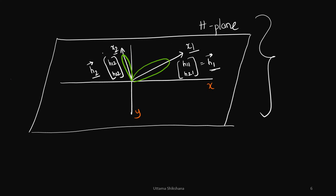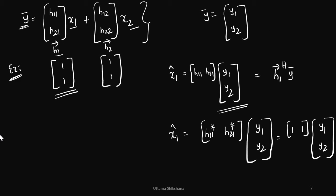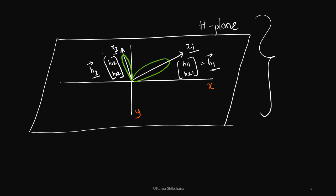Using this physical interpretation, let us see what we can do. The first case I consider is transmitting the same symbol x1 on both antennas. I will take h1 and h2 column vectors as [1,1] and [1,1] for simplicity, just as an example to understand how we can decode x1 and x2. So y-bar, which is [y1, y2], represents the received signals at the receiver antennas.